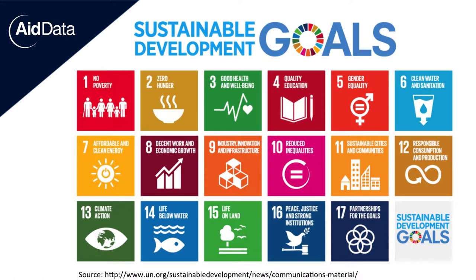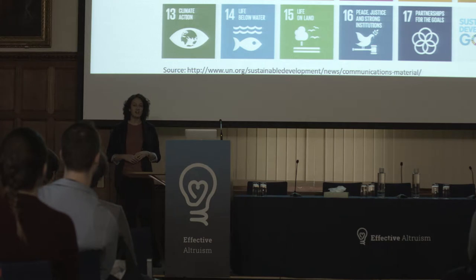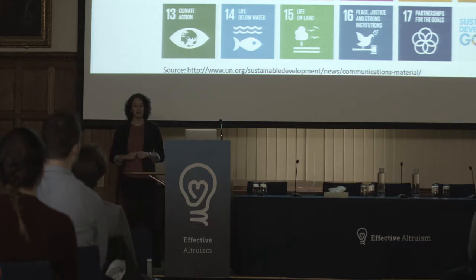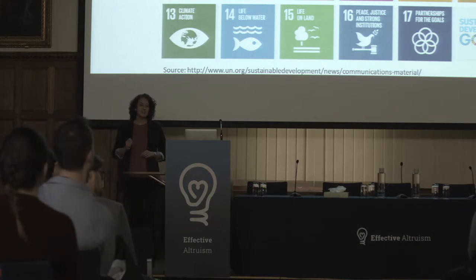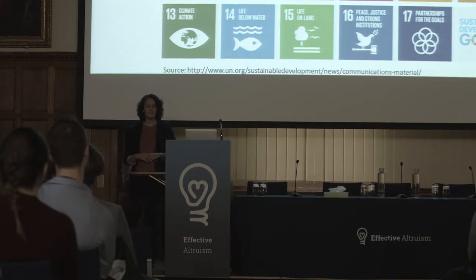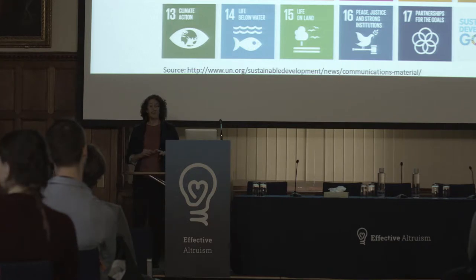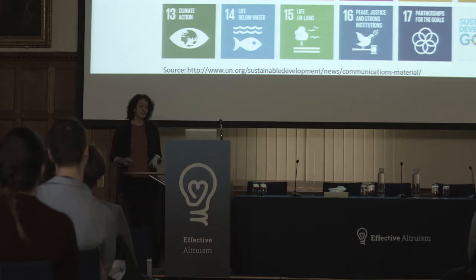Those represent just 4 of the 169 targets that are part of the Sustainable Development Goals. If we have any shot of achieving the SDGs by 2030 or ending extreme poverty in our lifetimes, the international development community needs to use every dollar of foreign aid as effectively as possible — precisely targeting resources, coordinating efforts to avoid duplication, and evaluating programs to learn from experience.